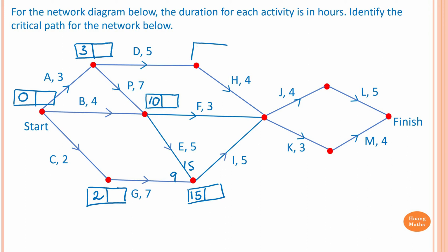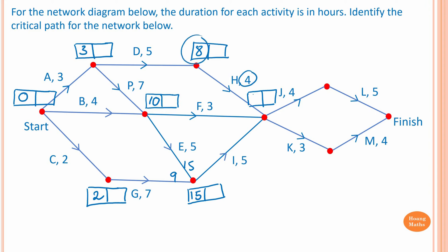To start on activity H: five plus three equals eight hours. To start on activities J and K, we draw a box here. To complete activity H: four plus eight equals twelve.